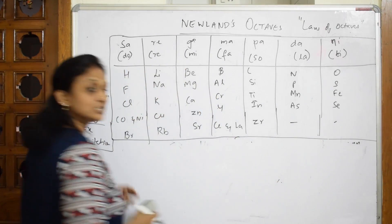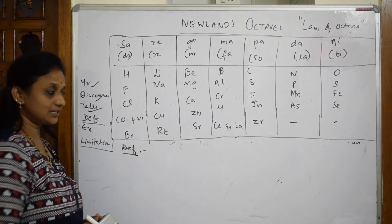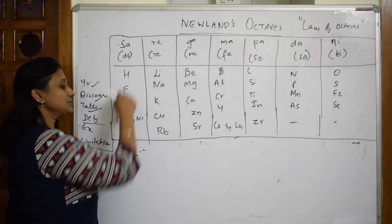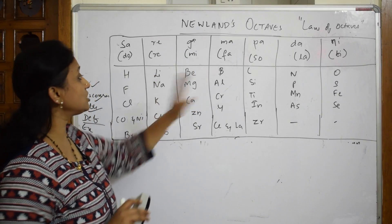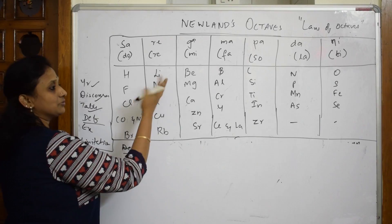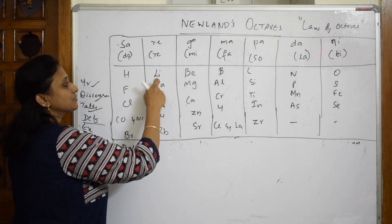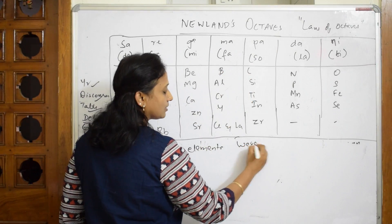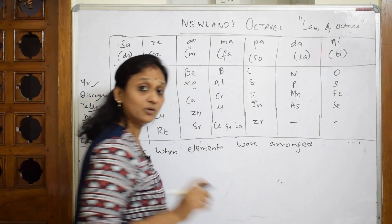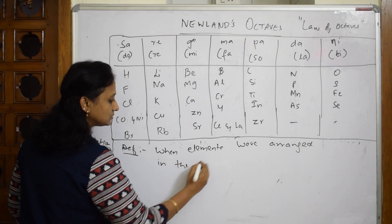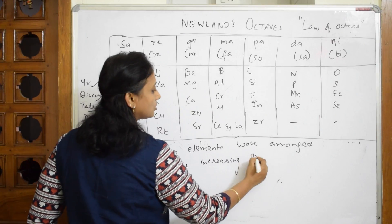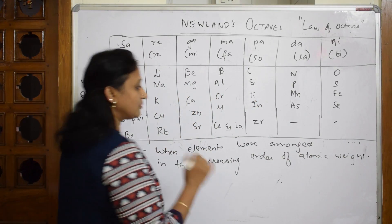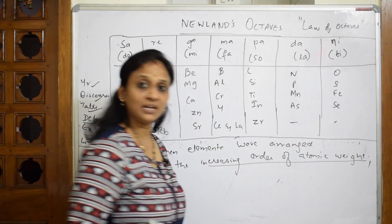For the definition, whatever 56 elements he had, he arranged them in the form of a tabular column. The key concept was arranging elements with similar properties in the increasing order of their atomic weight — starting from hydrogen, then lithium, beryllium, boron, and so on. So begin the definition: when elements were arranged in the increasing order of atomic weight...